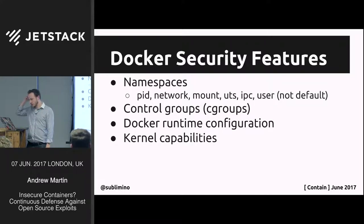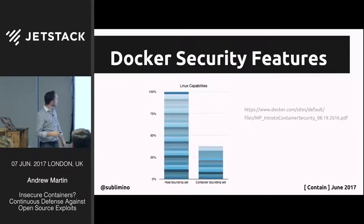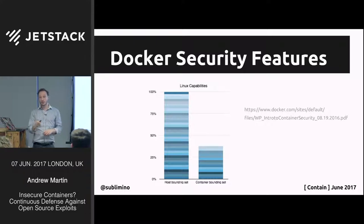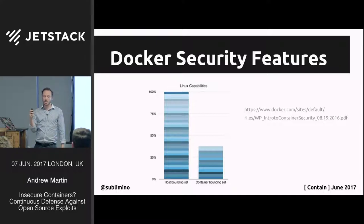The Linux kernel has over 600 system calls — a bug in any one is a potential attack surface. Docker reduces this significantly, blocking the majority of system calls by default. Looking at what dirty COW exploits: the ptrace call it uses is actually attempted to be blocked by Docker, but it has to be allowed in certain situations. It's very difficult to generically apply a bounding set of kernel capabilities to any given process.